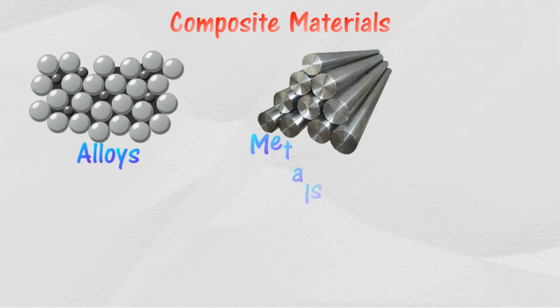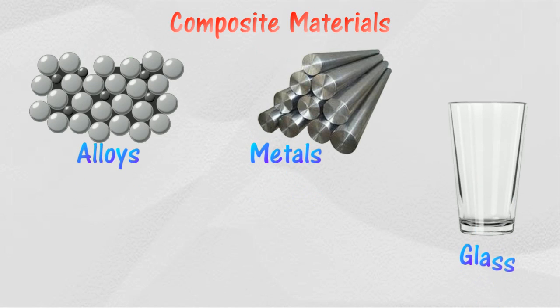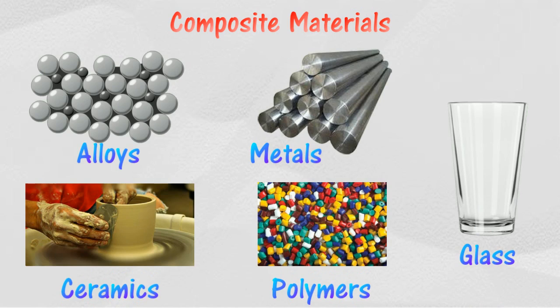Composite materials are produced from the combination of two or more different compounds such as alloys, metals, glass, polymers, and ceramics. The characteristics of the produced material are much more superior than those of the original components.